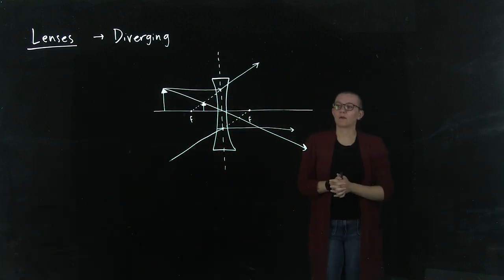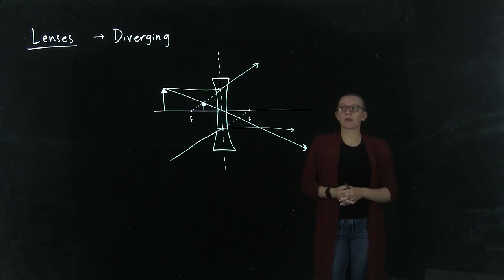Okay, so that's how you draw rays to figure out where an image is located for diverging lenses.